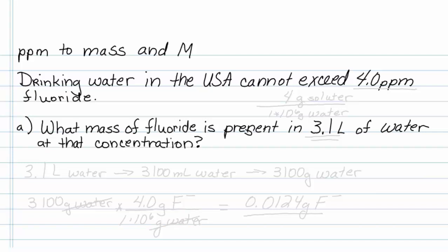This is how to get from parts per million to mass of material and molar concentrations. I looked up this value on the EPA site, and it tells me that drinking water in the USA cannot exceed 4.0 parts per million fluoride.